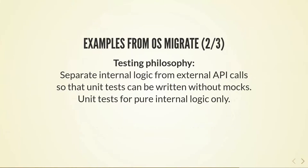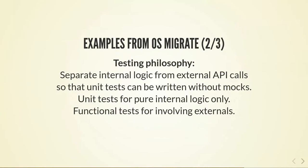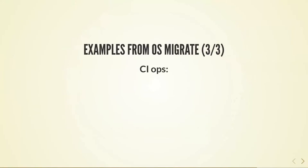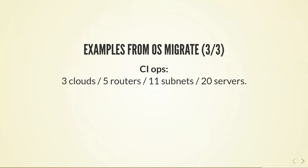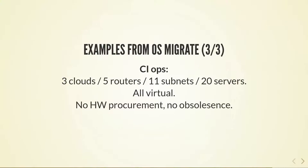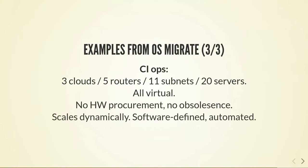So we write unit tests for pure internal logic only, and whenever we want to test something involving external calls we write functional tests for that. This combination gives us tests that are easy to write and maintain. For CI operations, we have a complex CI of three OpenStack clouds including five routers, 11 subnets, and 20 servers — but that's all virtual, so we don't have to deal with hardware procurement or hardware obsolescence, and it scales dynamically. It's all software-defined and automated, so if something goes wrong we can rerun the automation and the CI can get redeployed.